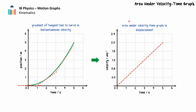The area bounded by the velocity-time graph and the time axis is the displacement of the object during the time interval. For uniform acceleration, this area can be broken into rectangles and triangles so it can be easily calculated.